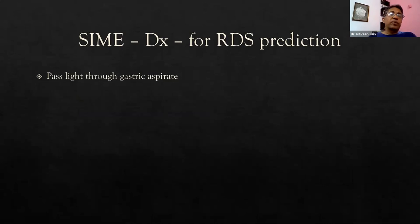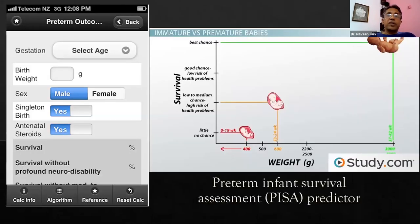If you feed the gestation also, there are apps for educating parents at the birth of a very preterm baby. It's called the PISA app—Preterm Infant Survival Assessment. You can feed items like gestation age, birth weight, gender, whether it's one or two babies, whether antenatal steroids were given or not. It will take data from that hospital and tell you the chances of survival prediction of this baby.